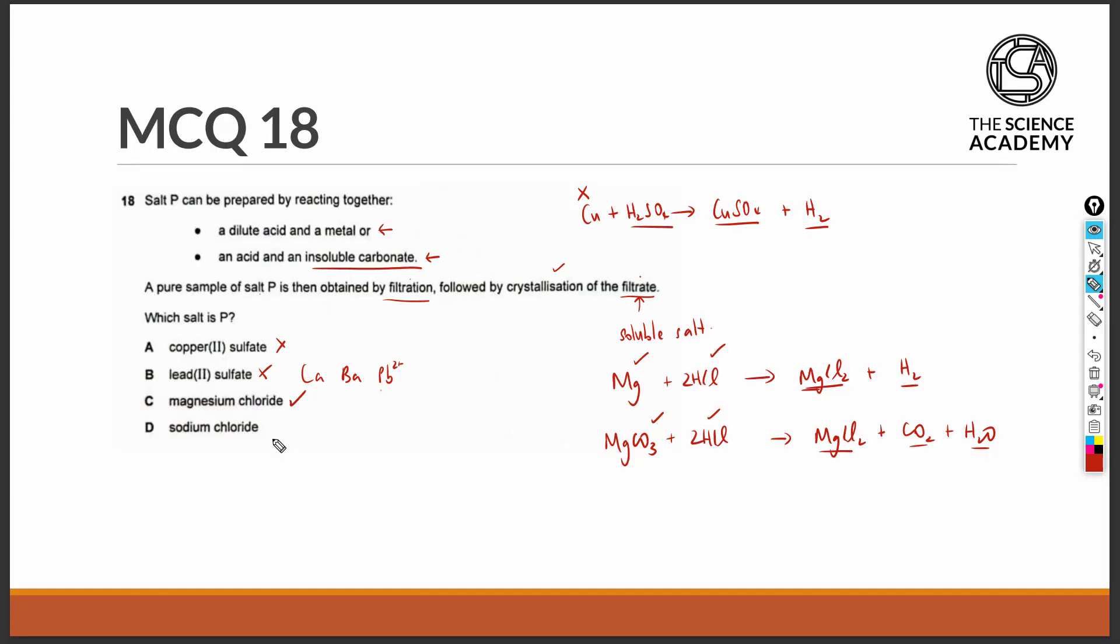Let's take a look at why option D is wrong. Option D is the salt of sodium chloride. To obtain sodium chloride from a metal and an acid, the acid must have been hydrochloric acid and the metal must have been sodium. This reaction will occur, but it is not a suitable mode of preparation because sodium is a very reactive metal and this reaction will be extremely explosive and dangerous.